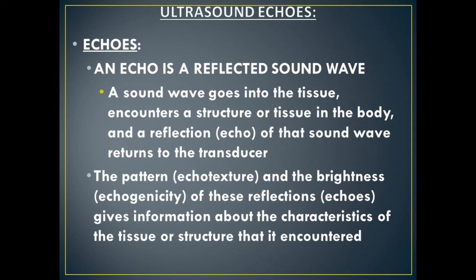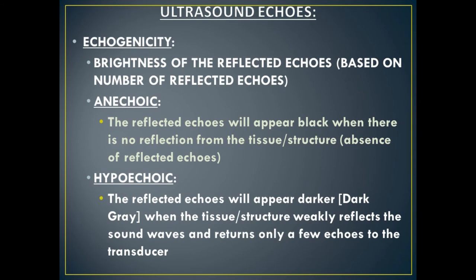What we care about with echoes is their brightness and their pattern, which gives us information about the characteristics of a mass. The first thing we look at is called echogenicity — how bright the reflected echoes are — and we determine brightness by how many echoes are in an area. If a mass is completely black inside, that means there's an absence of echoes. We call this anechoic, meaning no echoes return to the transducer when the sound wave hits that structure.